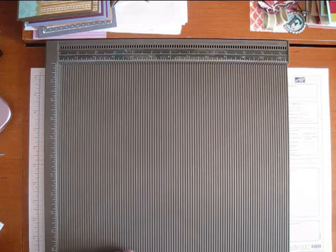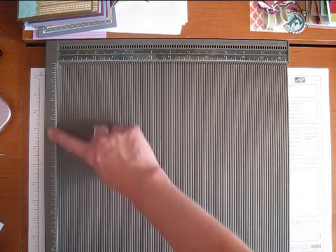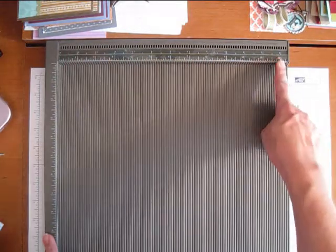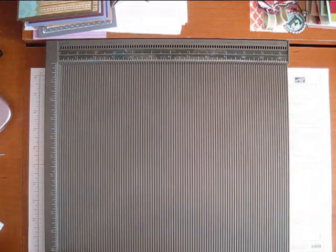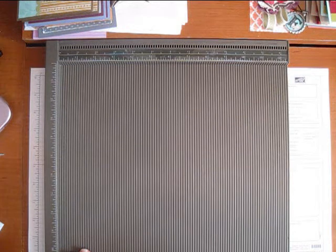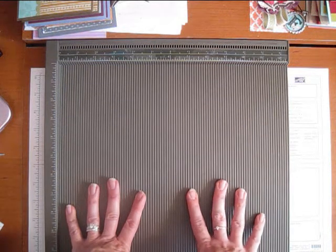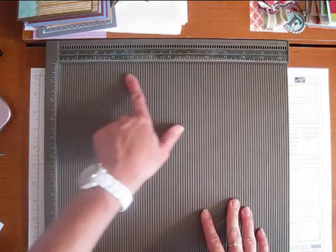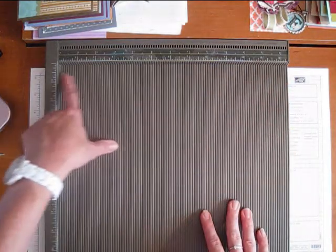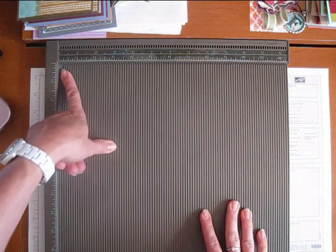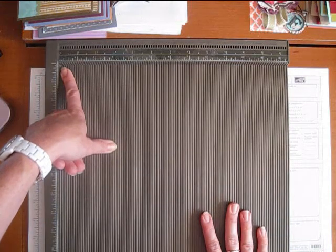As you can see it's a nice size, it's oversized 12x12 and it has measurements along both edges which is great. And the really great thing is, now I don't own another scoreboard and never have, so I guess some of them don't come in eighth of an inch increments but this does. Every eighth of an inch you can score and that's really great for making your projects.